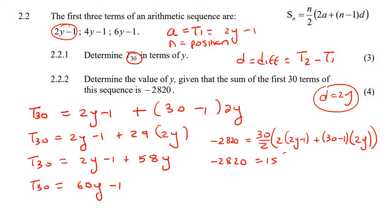And so let's go simplify this now. So 30 divided by 2 is 15. I'm then going to multiply that 2 into that bracket. And then I know that this part just becomes 58y, because it's 29 times 2, which is 58.